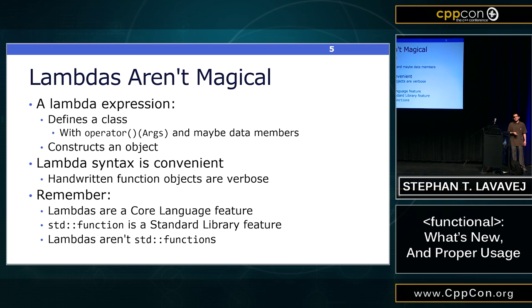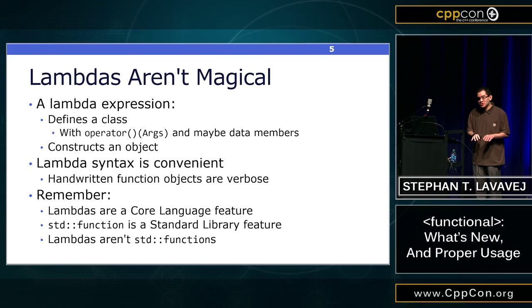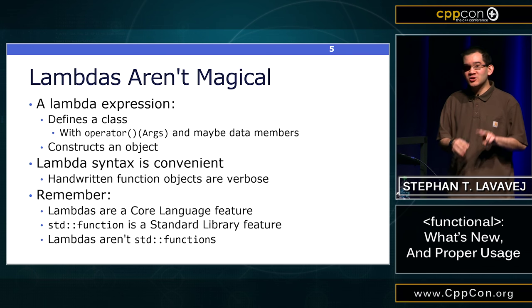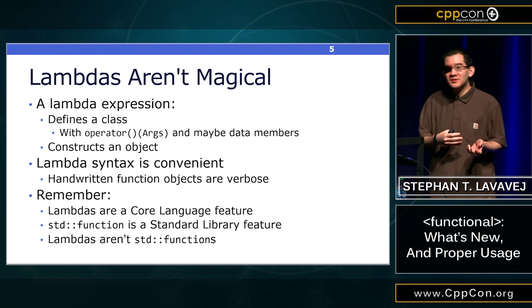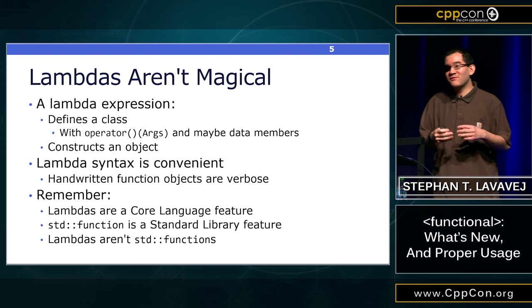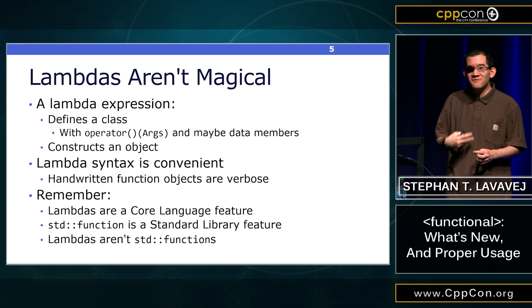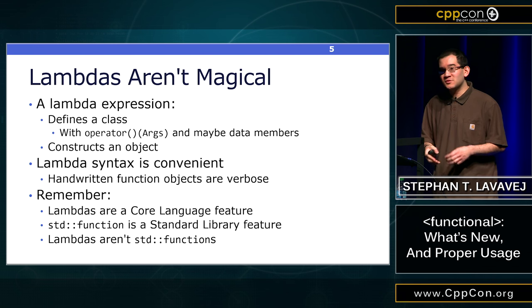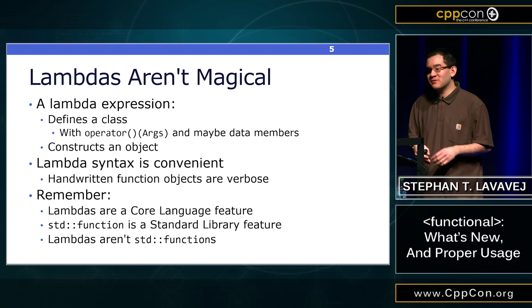Many programmers, when they start using lambdas, get strange ideas into their heads — they think lambdas are some sort of magical thing. The way I think about it, a lambda does something very simple. A lambda expression does exactly two things: it defines an unnamed class, and then it constructs an object of that type, possibly initializing some data members, which are its captures. The lambda syntax is very convenient, but it doesn't grant you physically new powers. You could always have done this by writing a function object by hand — it would just be more verbose.